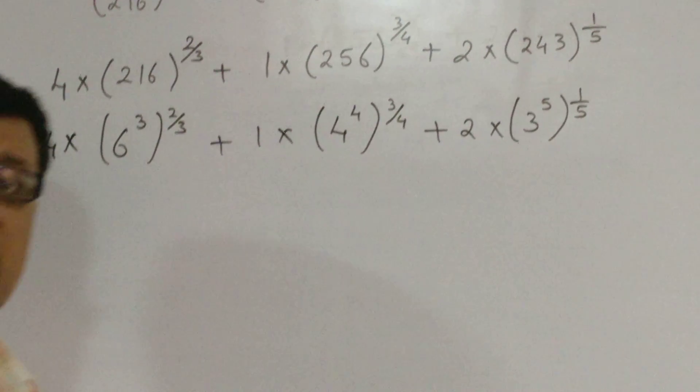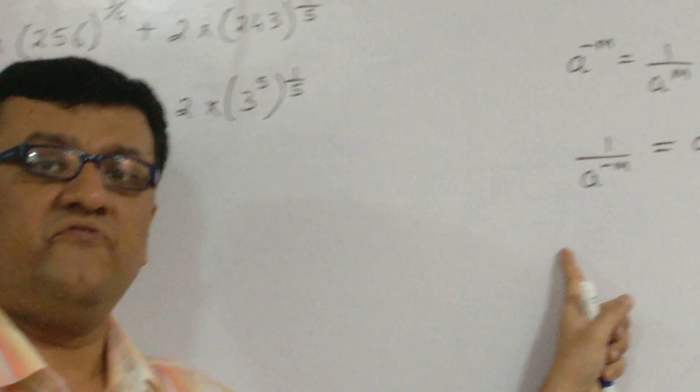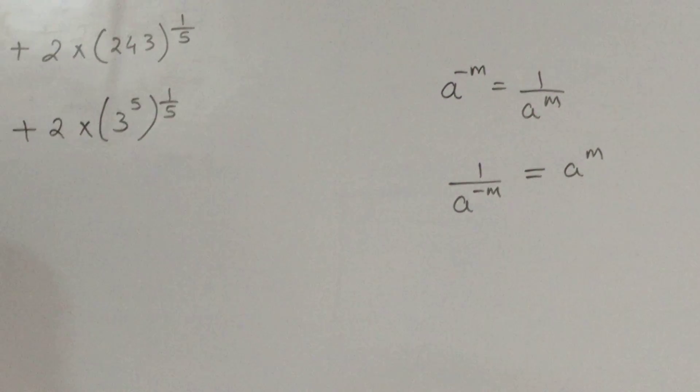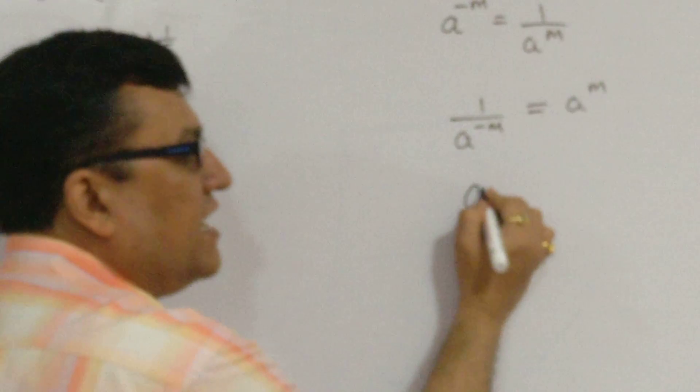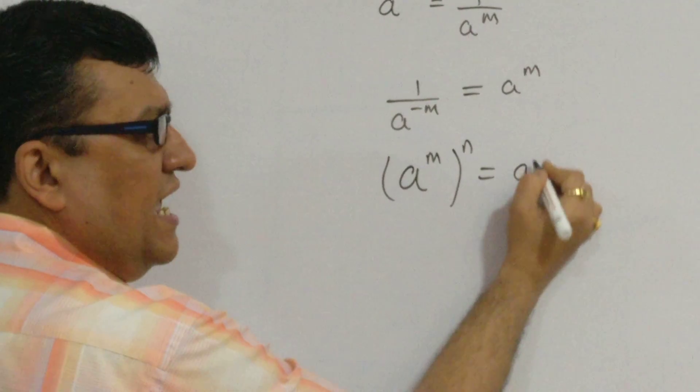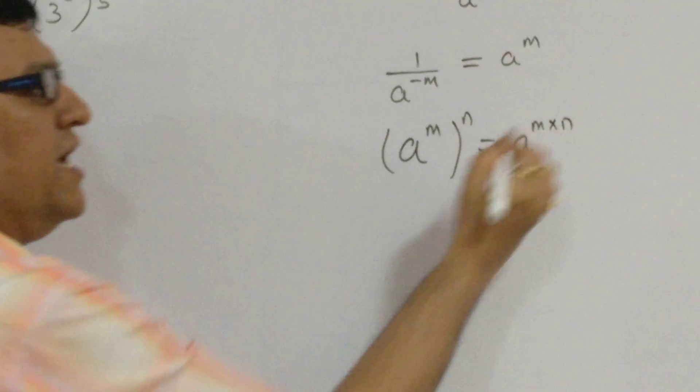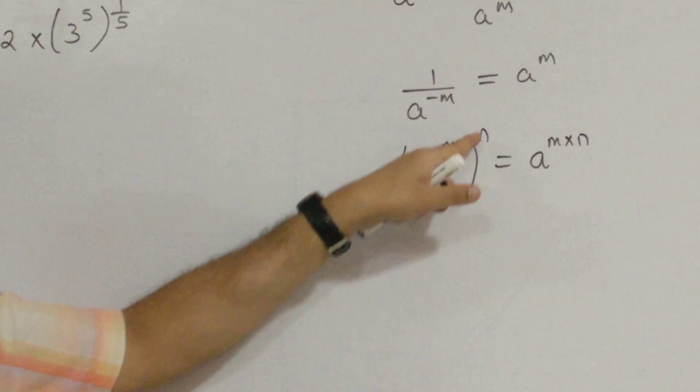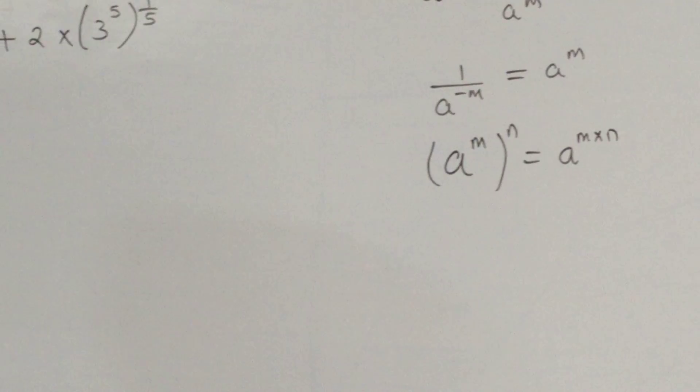Now, part of the law which we did over here, there is one more law which is there in laws of indices. I hope you are very much aware about it. But, a raised to m, the whole raised to n, answer is a raised to m into n. A raised to m, the whole raised to n, answer is a raised to m into n.